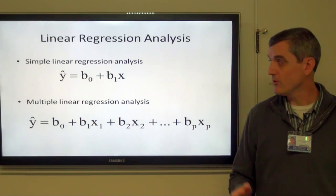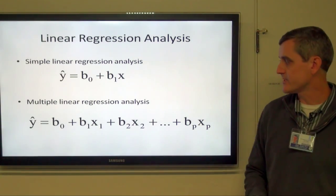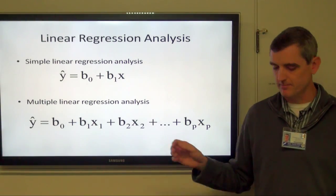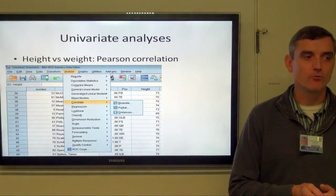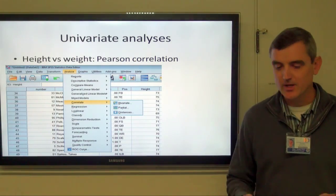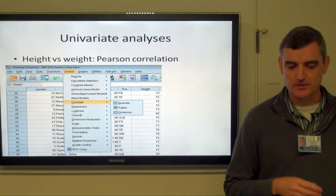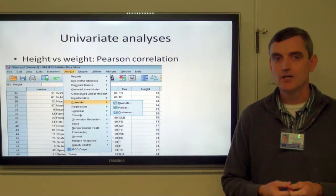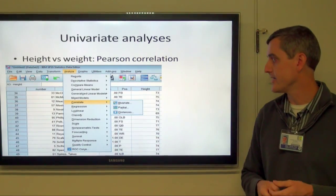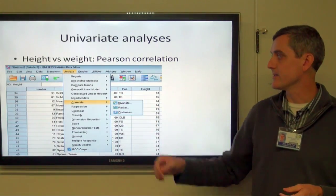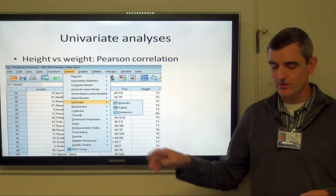Going back to the equation for linear regression, we can take a look at both groups together. The way we approach this in a study is first to examine each individually by doing a univariate analysis. Comparing height and weight, we do a Pearson correlation. To do that in SPSS, go to Analyze, Correlate, and then go to Bivariate.